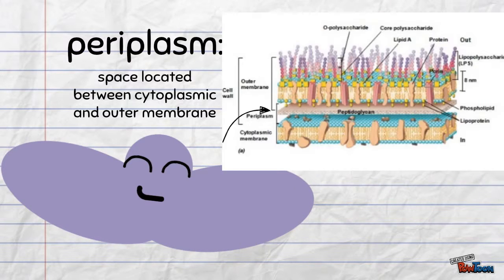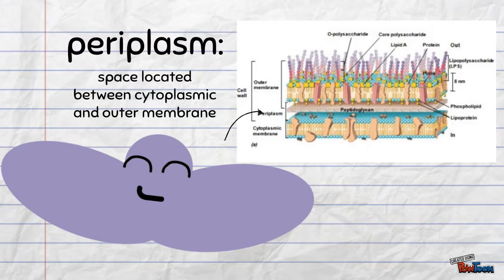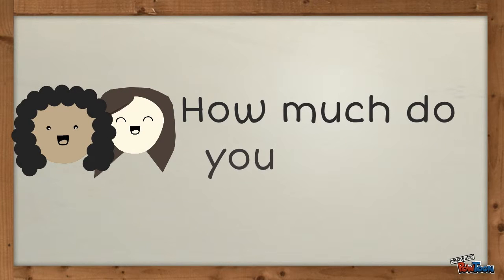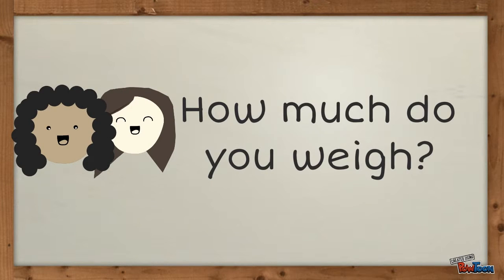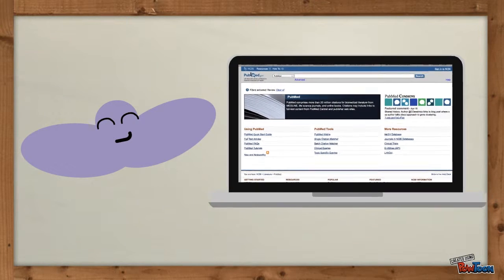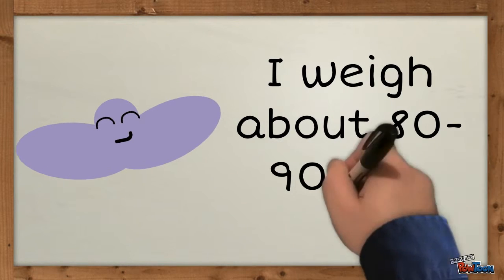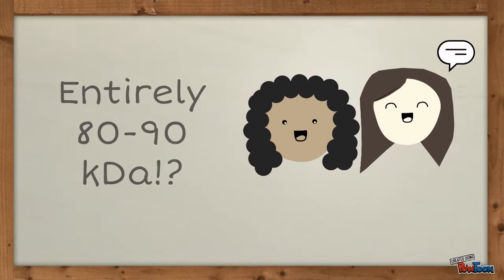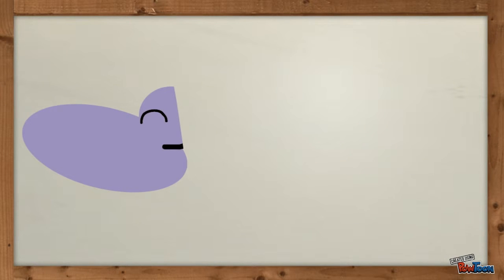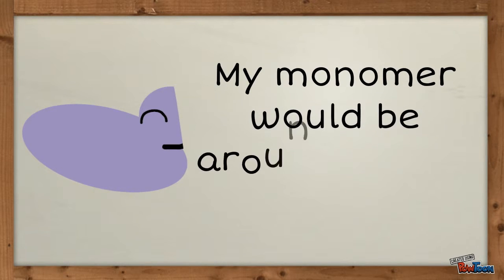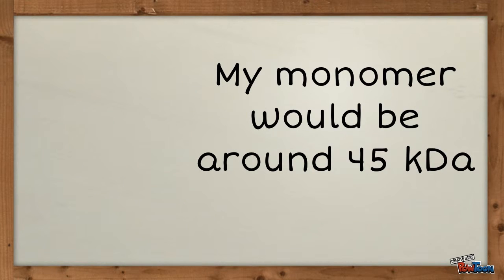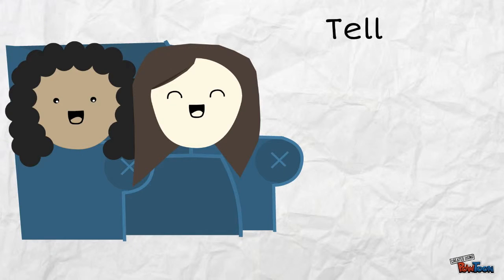Specifically in the periplasm. How much do you weigh? Sorry — it's fine, people look me up on PubMed all the time. I'm about 80 to 90 kilodaltons. Wow, entirely 80-90 kilodaltons? Yes, but if you're characterizing me by my monomer I would be half, because I'm a dimer.